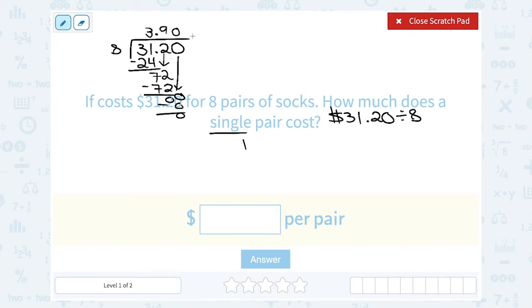We got 3.90. And remember, we're talking about money. So that would be $3.90. So it's $3.90 per pair of socks.